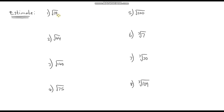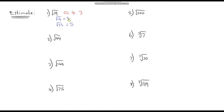Question number one: the square root of 19. The square numbers below and above 19 are 16 and 25. The square root of 16 is 4 and the square root of 25 is 5, so the answer is going to be between 4 and 5. Whereabouts between 4 and 5? Well, 19 is closer to 16, so it's going to be less than 4.5. I'm going to say approximately 4.3.